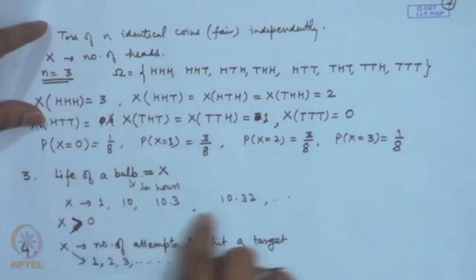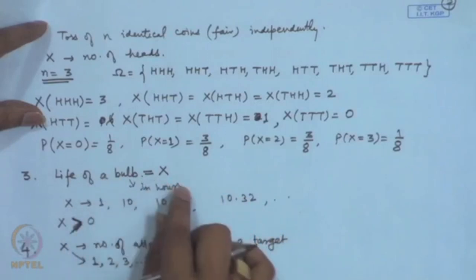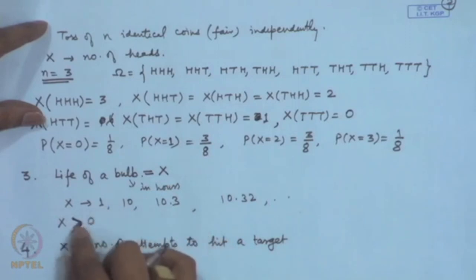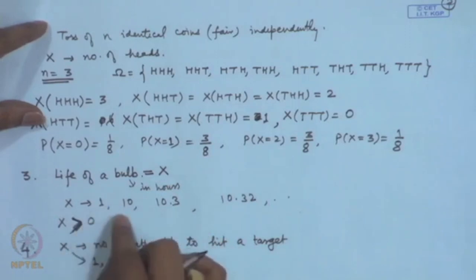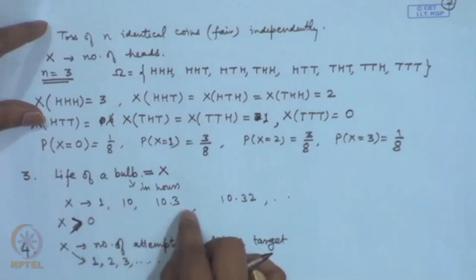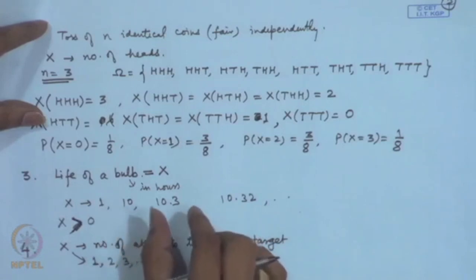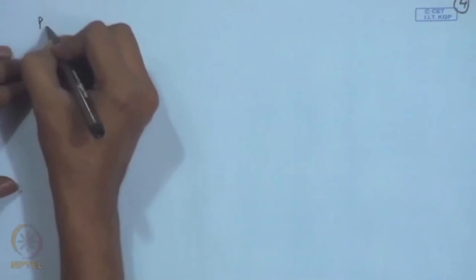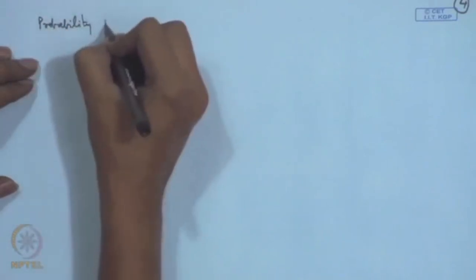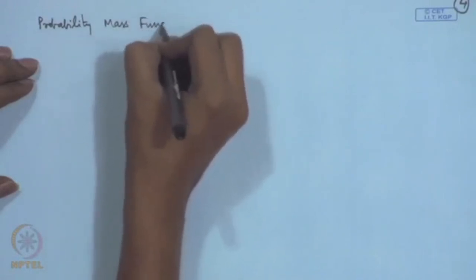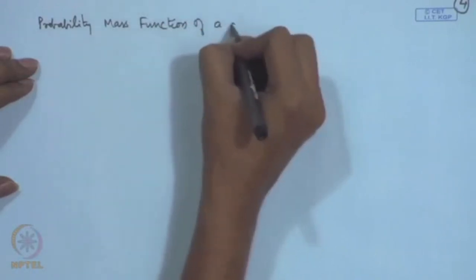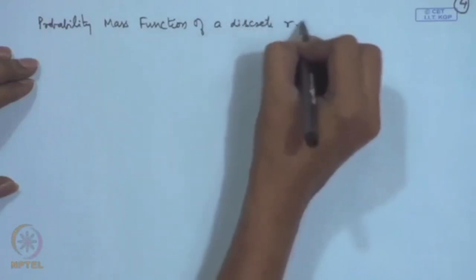For a continuous random variable, we cannot allocate probabilities to individual points. However, we allocate density or probabilities over intervals. So we have a probability density function in this case. Let me explain these concepts through various examples — starting with the probability mass function of a discrete random variable.